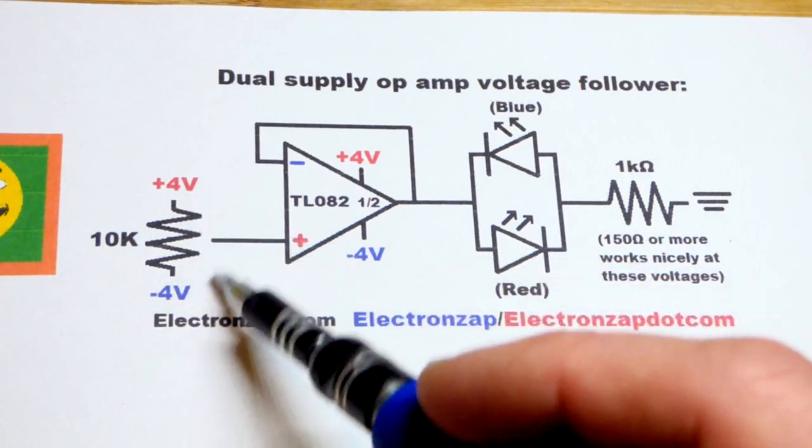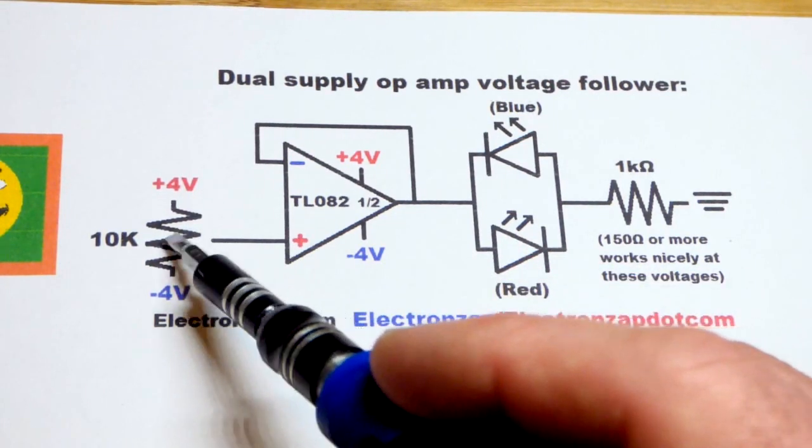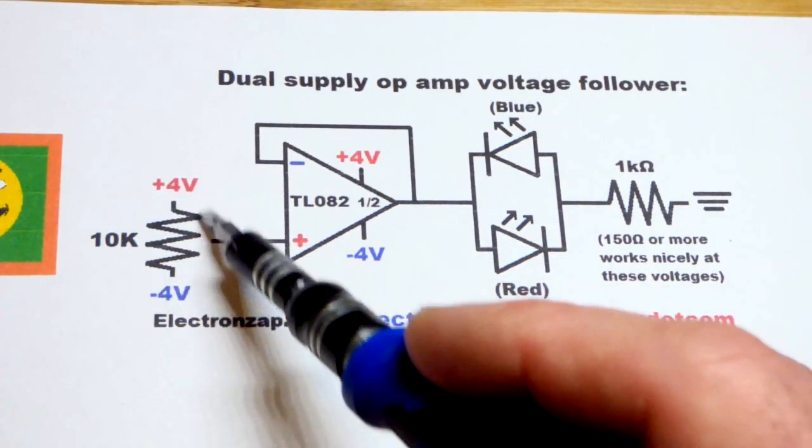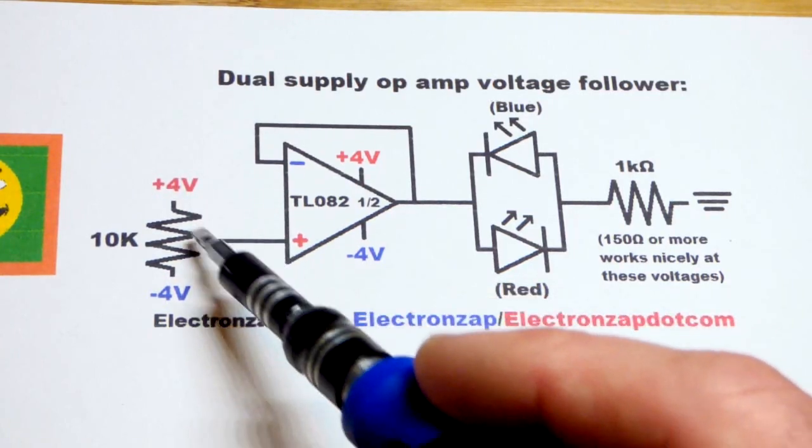We got another one here. The difference is we can adjust that. So I forgot to draw a little arrow there, but this is a trim pot. We can slide the wiper up and down, get a fraction of the voltage.